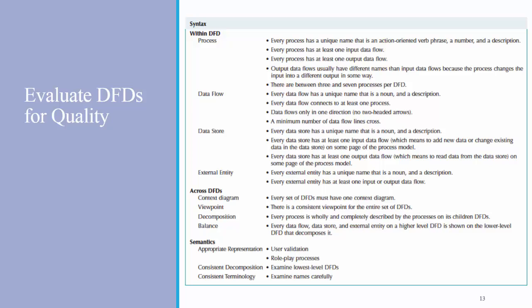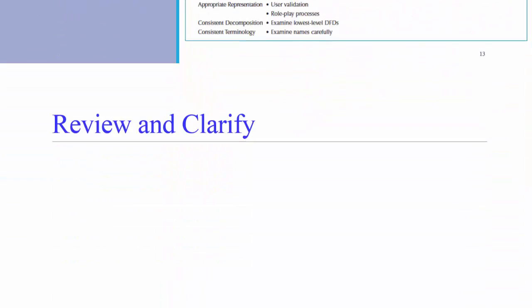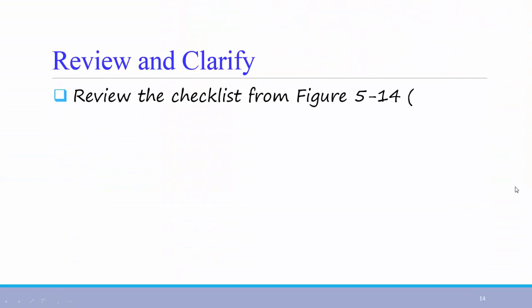Finally, in figure 5-14 of the textbook, which is on page 174 in the 6th edition, there is an excellent quality checklist that, at least for this course, you should check after every time you create a set of data flow diagrams. Take a minute to review the checklist from this figure.